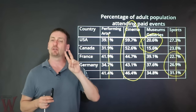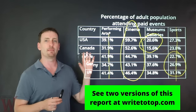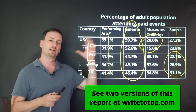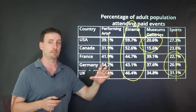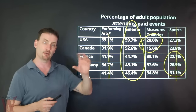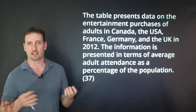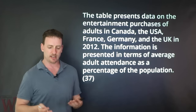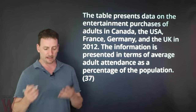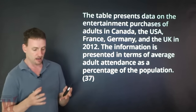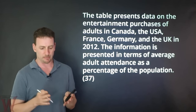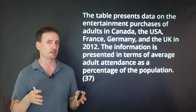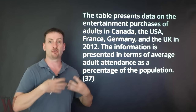I wrote actually two versions of this task. You can see both of them on my website — there's a link below in the description box in YouTube. But I'm going to show you the one where I split it by similarity and difference. Body paragraph one: similarity and difference. Body paragraph two: similarity and difference. First, my introduction — again, you're just paraphrasing. The table presents data on the entertainment purchases of adults in Canada, the USA, France, Germany, and the UK in 2012. The information is presented in terms of average adult attendance as a percentage of the population. Thirty-seven words. I could probably make it shorter, but because I listed each country it's making it longer.